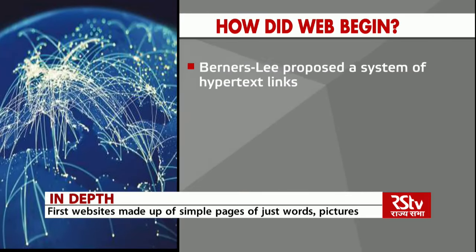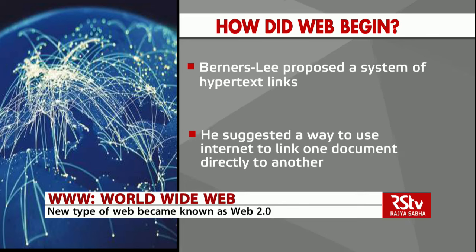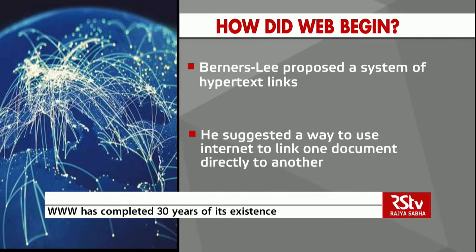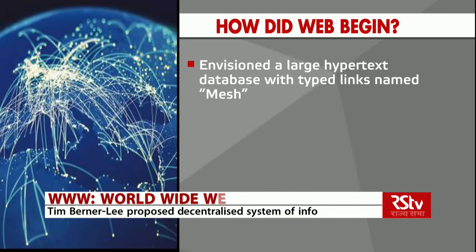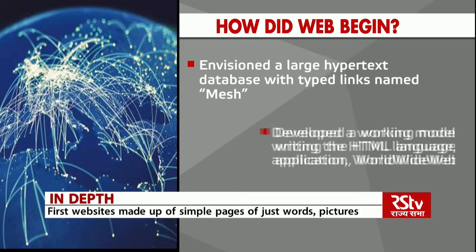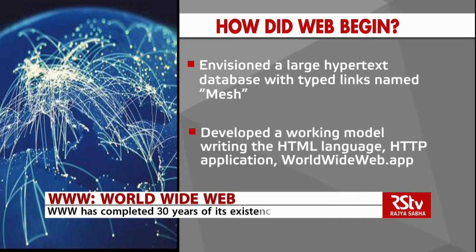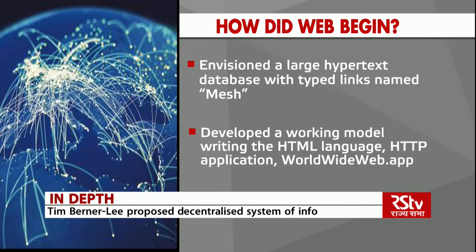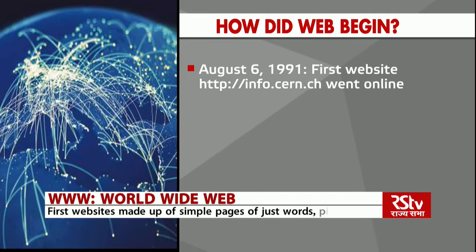Initially, Berners-Lee proposed a system of hypertext links — the possibility of clicking keywords on one page and being led directly to the page dedicated to them, thus connecting several other pages. He envisioned a large hypertext database with typed links named 'Mesh' to help his colleagues share information among multiple computers. Berners-Lee was then allowed more time by his boss to develop his flowchart into a working model, writing the HTML language, the HTTP application, the World Wide Web app, the first web browser and page editor. By 1991, the external web servers were up and running, and on 6th August 1991, the first website went online.